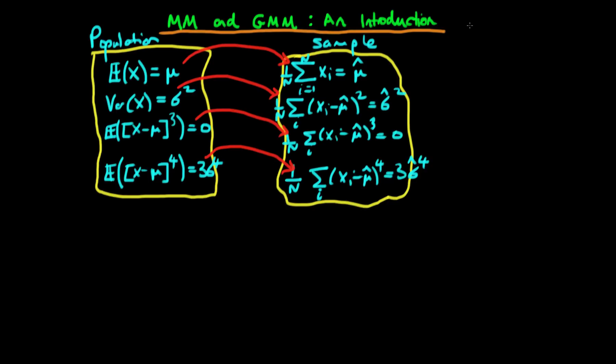But the problem here is that we only have, in this case, k equals two parameters which we are trying to estimate, whereas we have a number of moment conditions which is equal to four.